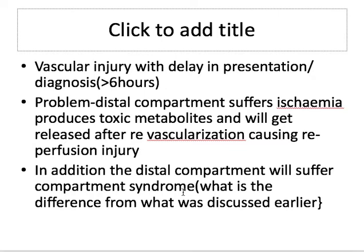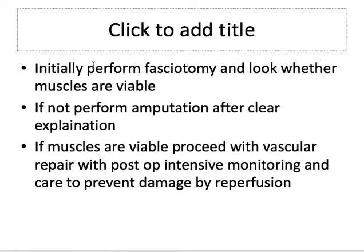You must also attend to the distal compartment syndrome — if you simply do the vascular repair and reperfuse without addressing it, even viable muscles may suffer secondary damage, wasting all your effort. How do you face this in a delayed presentation: take the risk of reperfusion and revascularize, or do a primary amputation? It is a very difficult decision. The best approach is to first perform a fasciotomy — which is part of the treatment regardless — and look at whether the muscles are viable.